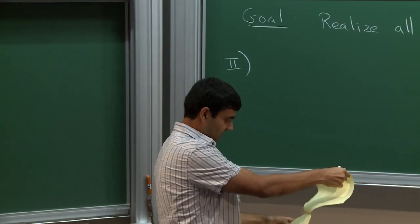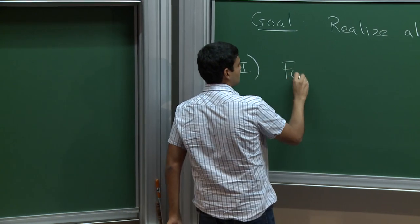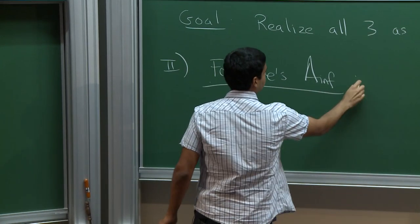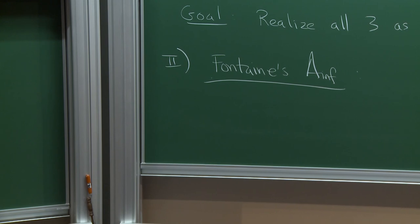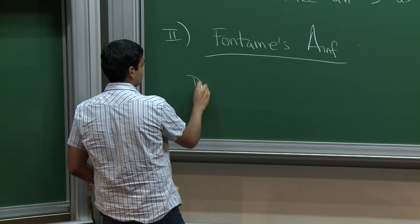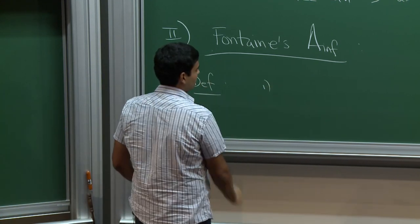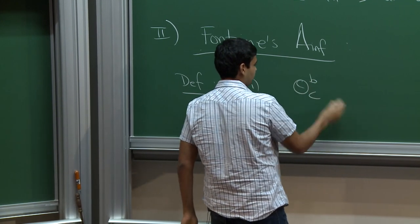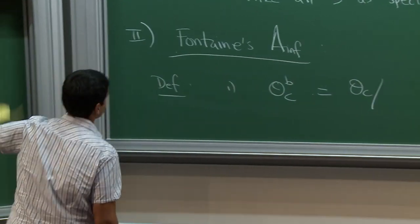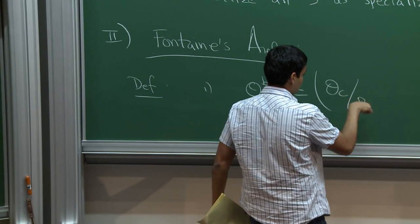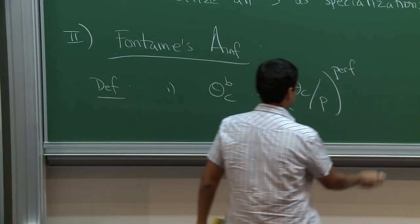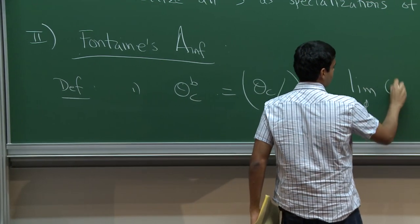This ring is the main playground in this talk: it's Fontaine's ring A_inf, which is going to be the object over which everything lives. The definition proceeds in two steps. First, we define what nowadays we call O_C_flat. By definition, you take the ring of integers of C, reduce it mod p, and since you now have a ring of characteristic p, it makes sense to talk about its perfection as an inverse limit. This is the inverse limit over Frobenius of O_C mod p.